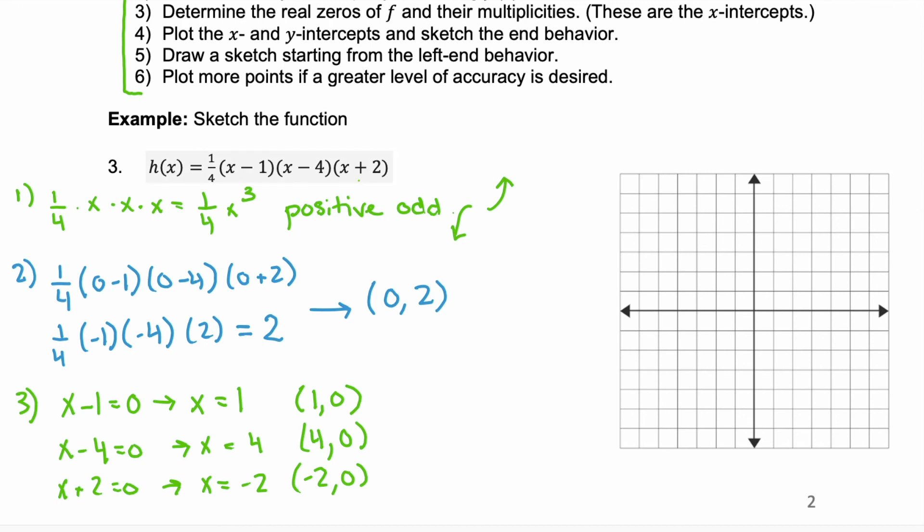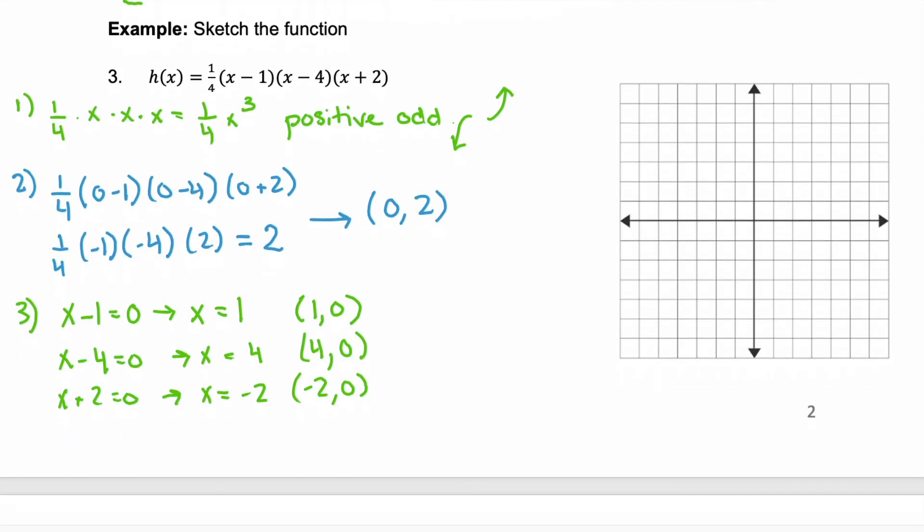Notice, each of these factors does not have an exponent so, they have multiplicity of 1. And remember, a multiplicity that is odd they cross. So, these are all going to be crossing points.